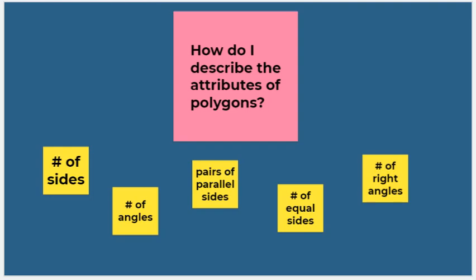One of the things we really worked on was describing the attributes of polygons and using geometric vocabulary to describe shapes. We want to think about things like: how many sides, how many angles, are there any pairs of parallel sides — remember that means the sides are the same distance apart forever — are there any equal sides, and how many right angles, if any.